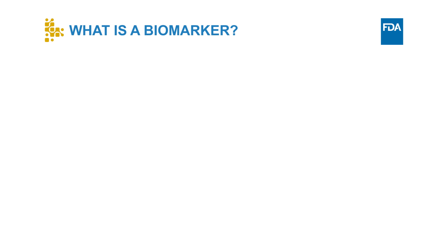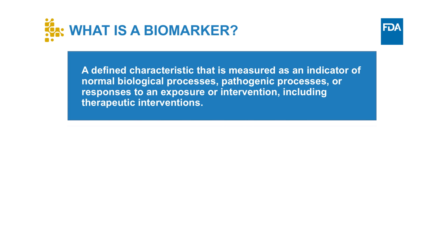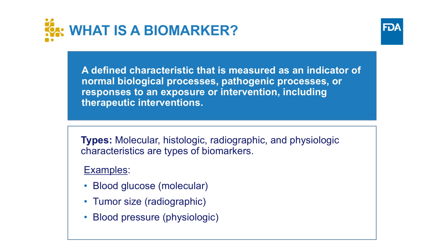So let's start with the term biomarker. What is a biomarker? A biomarker is a defined characteristic that's measured as an indicator of normal biological processes, pathogenic processes, or responses to an exposure or intervention, including therapeutic interventions. Molecular, histologic, radiographic, and physiologic characteristics are types of biomarkers. Some examples are blood glucose, tumor size, and blood pressure.